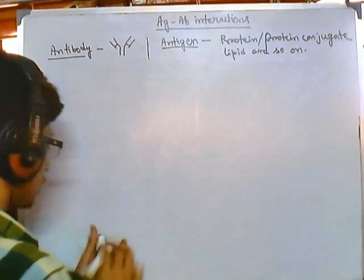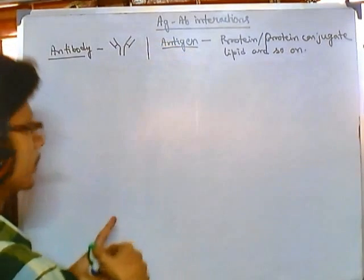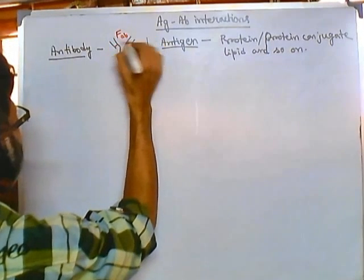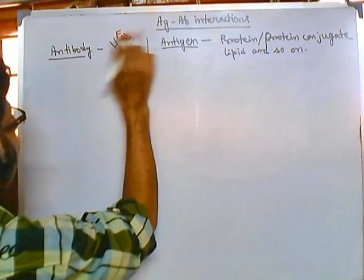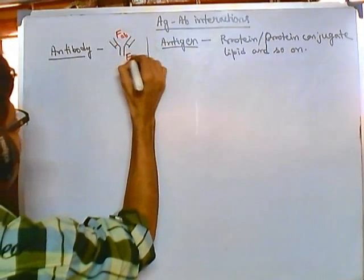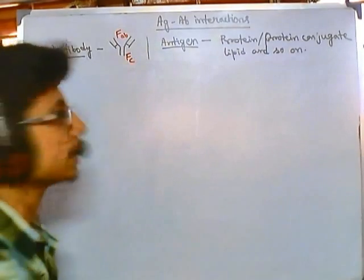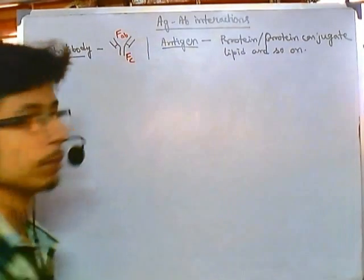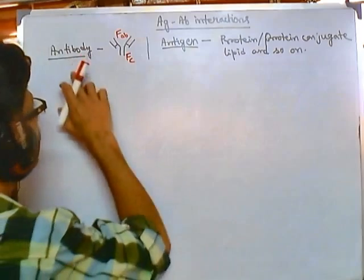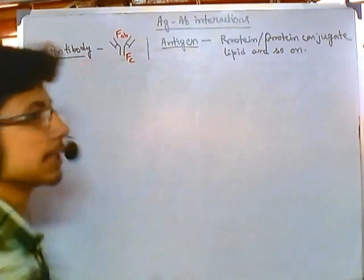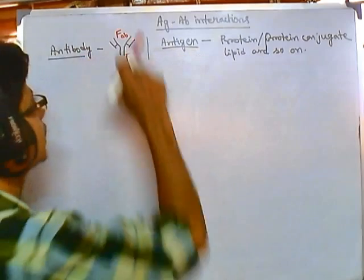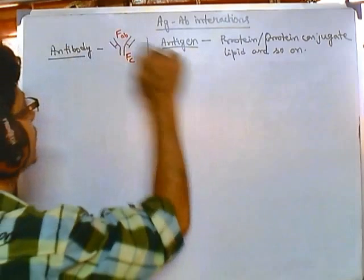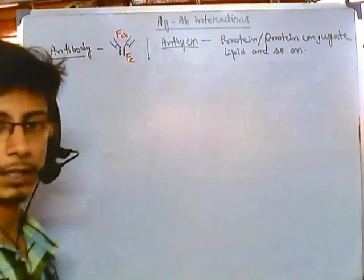For the antibody, we must know two different regions. One is the FAB region — this is called FAB — and this is called the FC portion. F-sub-C and F-sub-AB are the two portions of an antibody. Now the interaction between antibody and antigen occurs at the FAB region, because FAB is the attachment region where the antigen binds.